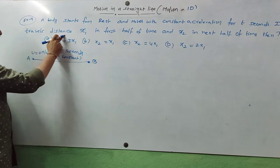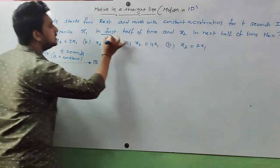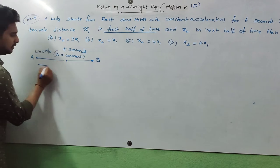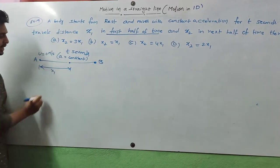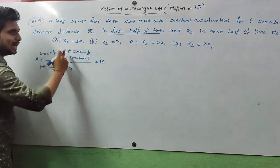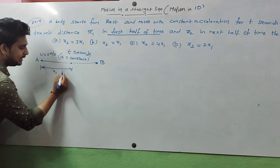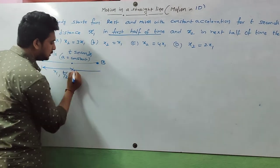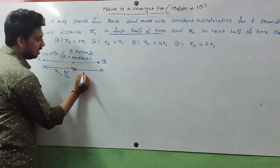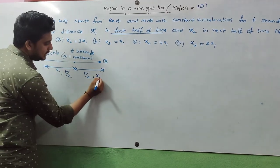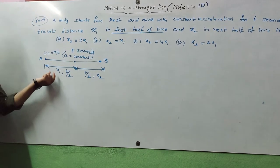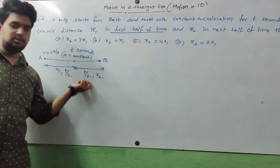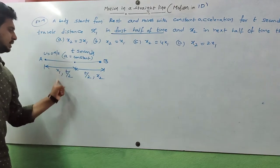The total time t seconds is classified into two halves. In the first half of time, which is t/2 seconds, the body covers distance s1. In the next half of time, another t/2 seconds, the body covers distance s2. We need to find the relation between s1 and s2.